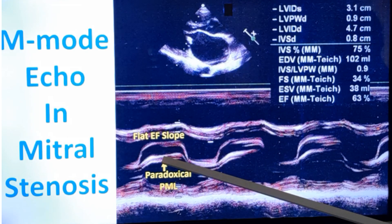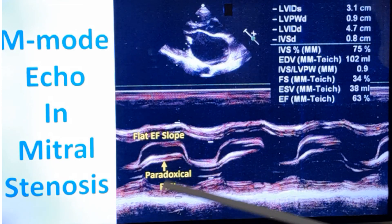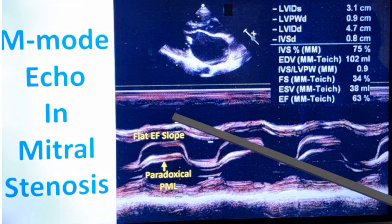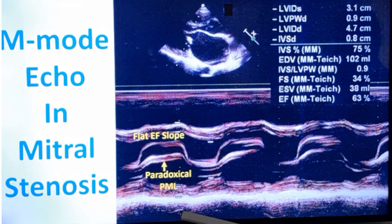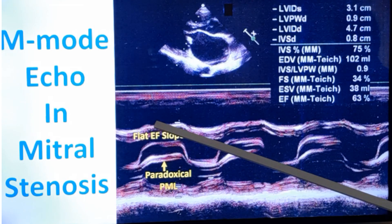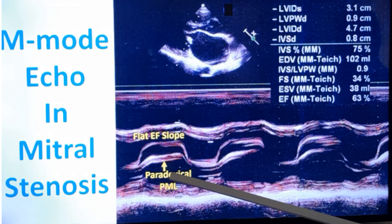Paradoxical motion of the posterior mitral leaflet occurs because the commissures are fused. Normally, when the anterior leaflet moves anteriorly and the posterior leaflet should move posteriorly, but due to commissure fusion in rheumatic mitral stenosis, the posterior leaflet is pulled along anteriorly, causing paradoxical anterior motion of the posterior mitral leaflet.